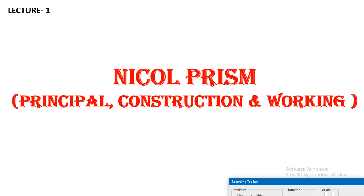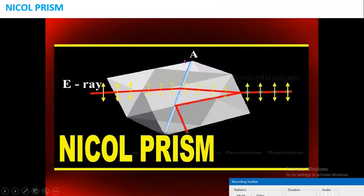Good morning, welcome to the first lecture video on the Nicol prism — its principle, construction, and working. In 1928, Nicol discovered the O-ray and E-ray. He eliminated the ordinary ray by utilizing the phenomenon of total internal reflection, and the extraordinary ray emerged out.